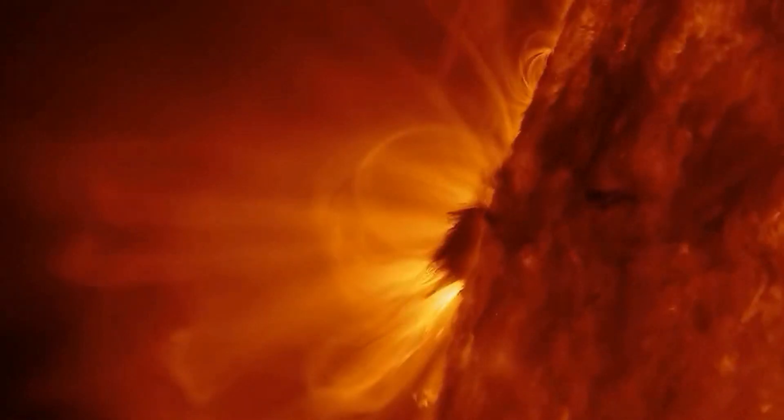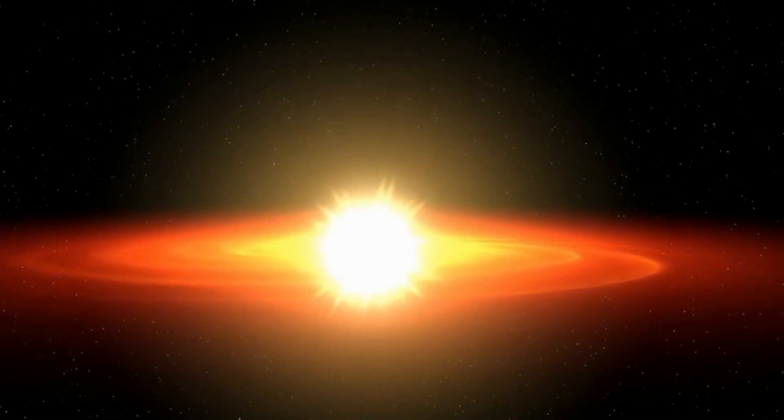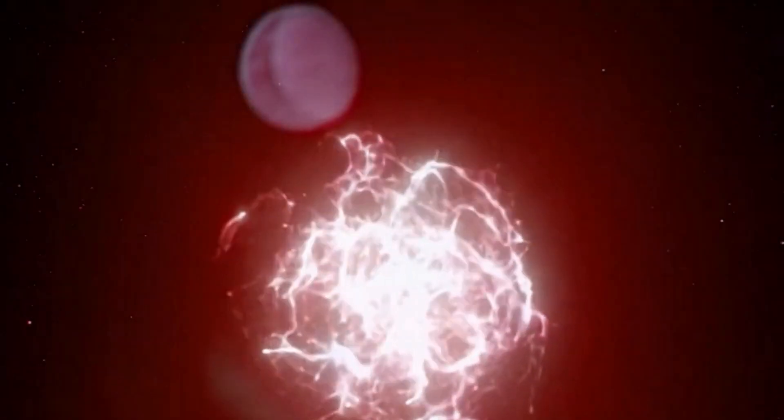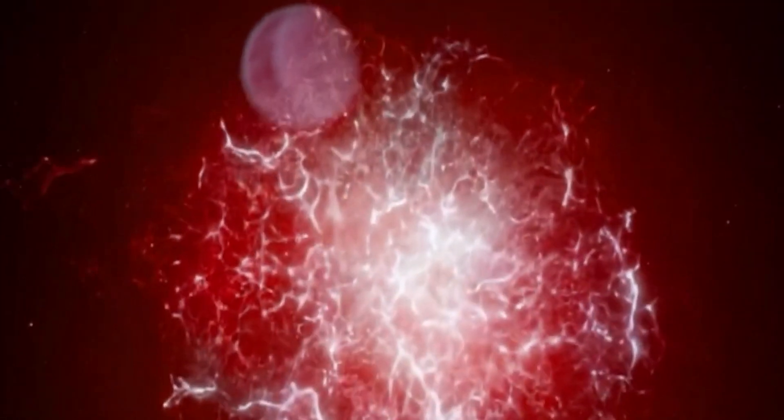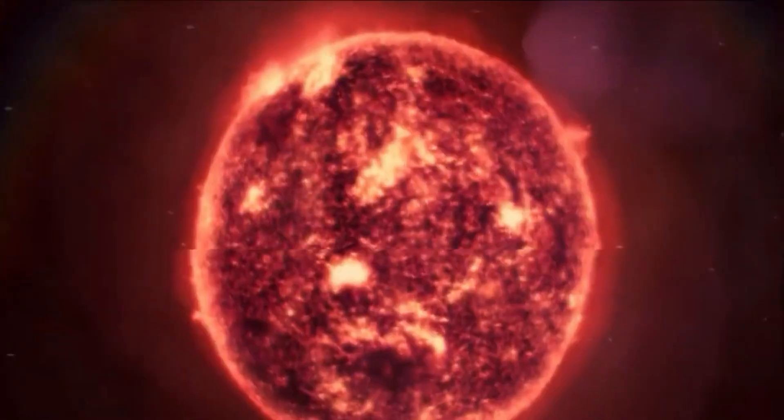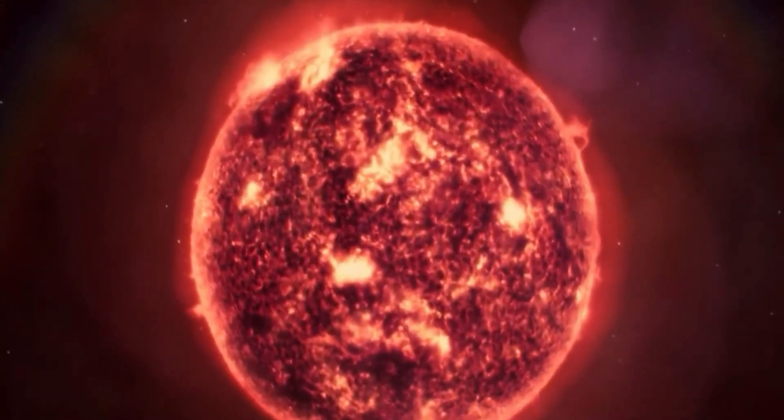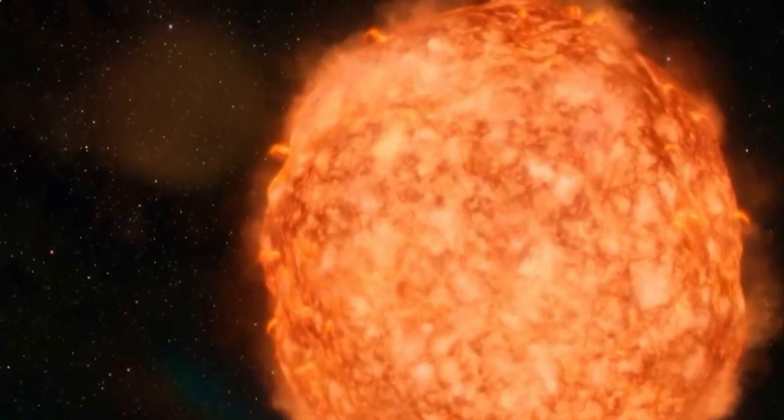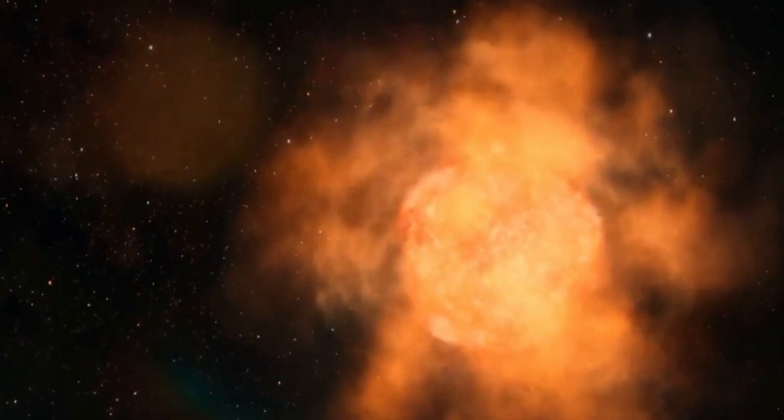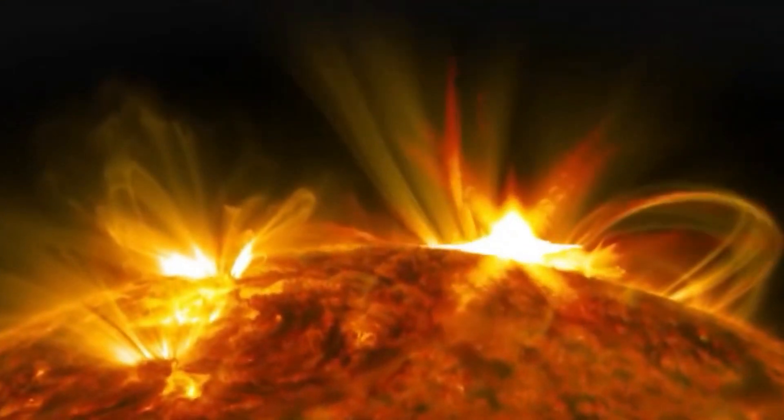In the case of Betelgeuse, the SME resulted in the expulsion of a mass 400 billion times greater than what is typically observed in similar events on other stars or coronal mass ejections on the Sun. To put it into perspective, this mass is multiple times the size of the Moon and was propelled at astonishing speeds. It's worth noting that such a colossal mass ejection from a star's surface had never been witnessed before.